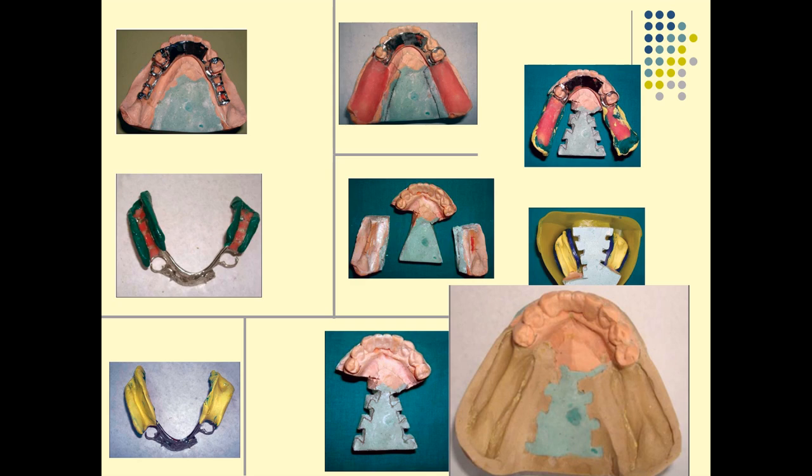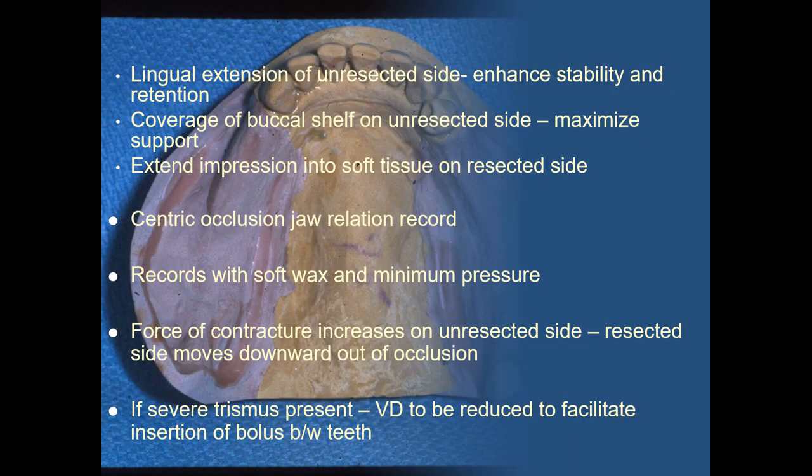This is a very important topic and can be expected as a short note under the RPD section. In the altered cast impression, the lingual extension of the unresected side must be recorded properly to enhance stability and retention, and maximum soft tissue coverage is always attempted. Coverage of the buccal shelf on the unresected side will maximize support. The impression can also be extended into the soft tissue on the resected side or even beyond it to provide cheek support and prevent facial concavity secondary to loss of bone and soft tissue, thereby enhancing aesthetics.